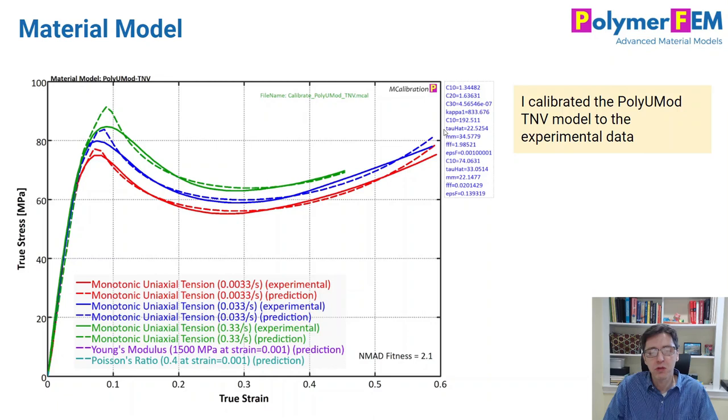These are really important features when you have a material that undergoes this type of localized deformation, the strain softening at larger strains. There are very few materials that can actually do that kind of prediction. So I picked this one.